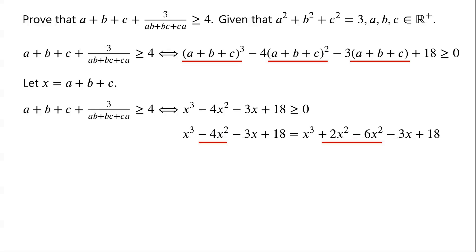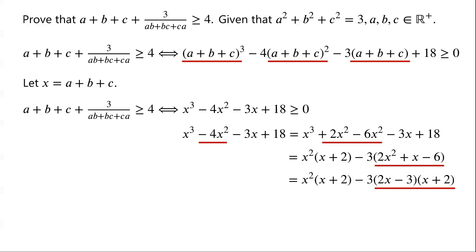We write −4x² as 2x² − 6x². Then x³ + 2x² = x²(x + 2), and −6x² − 3x + 18 = −3(2x² + x − 6) = −3(2x − 3)(x + 2). Both terms share the common factor (x + 2), so the expression factors as (x + 2)(x² − 6x + 9). Since x² − 6x + 9 = (x − 3)².